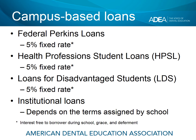Some of you may have campus-based loans, depending on the school you attend and the availability of these loans. Federal Perkins loans have a 5% fixed rate — some of you may have these from college or a post-bac program. Health Professions student loans also have a 5% fixed rate, as do loans for disadvantaged students, called LDS. Institutional loans, which come directly from your school from private funds, will depend on the terms assigned by the school. Most campus-based loans are at 5% fixed; if you have an institutional loan, check with your school about the interest rate.